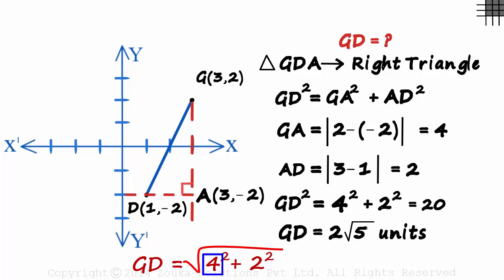4 is actually the difference between the Y coordinates of G and D. And 2 is the difference between the X coordinates of G and D. So can we derive a formula to find the distance between two points?